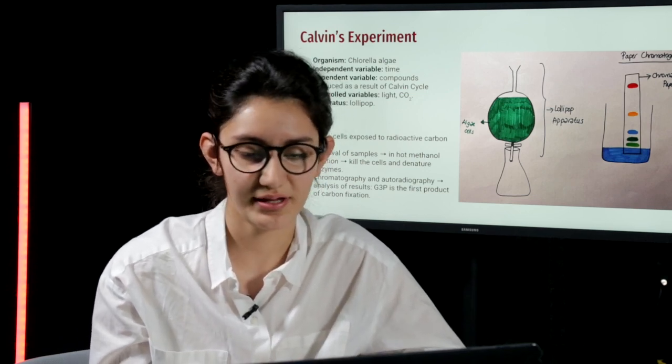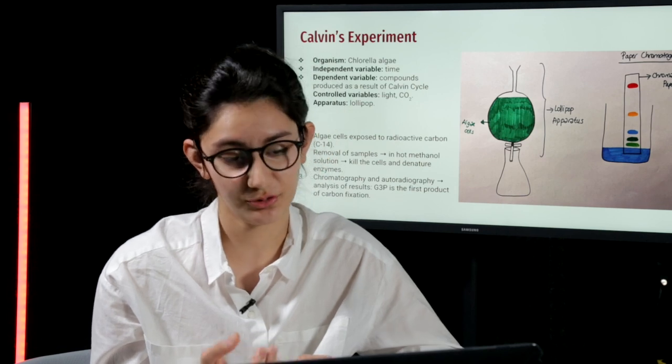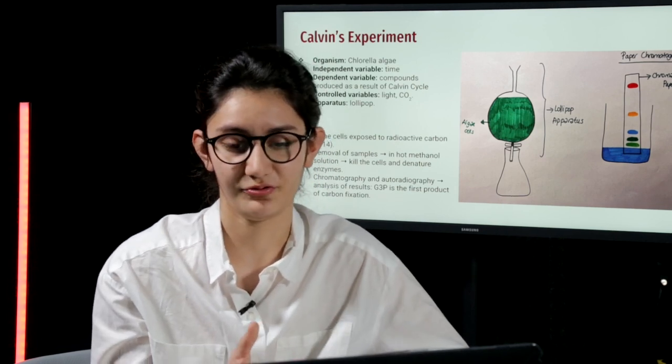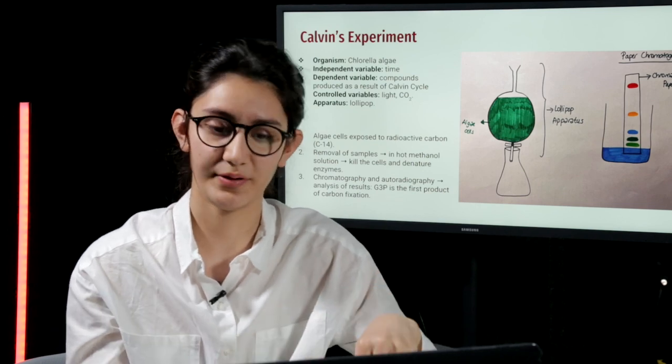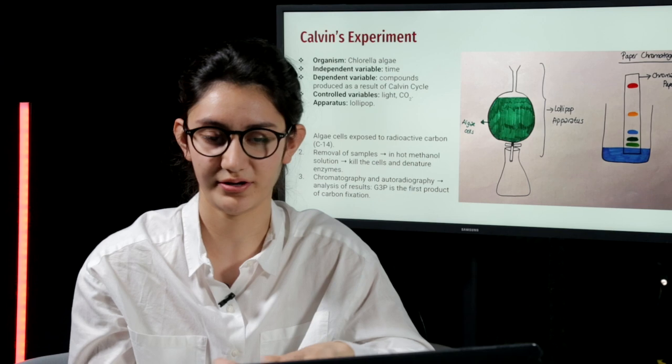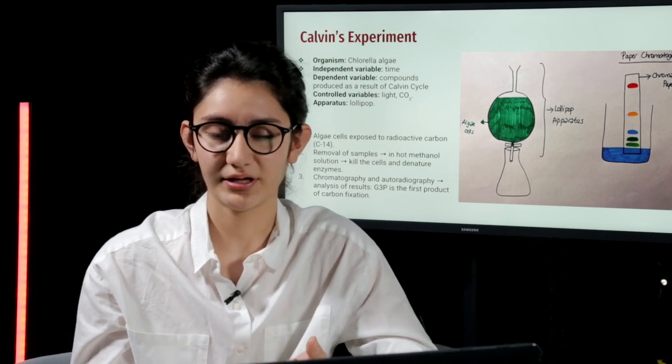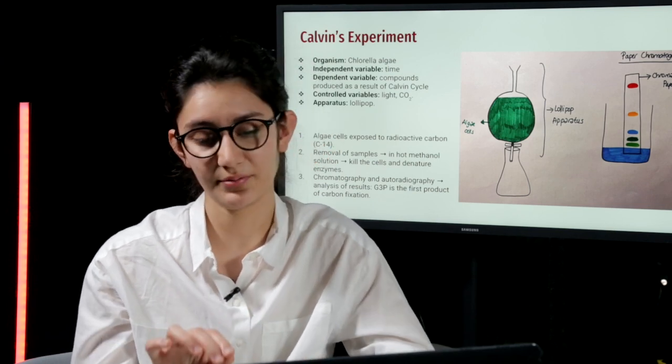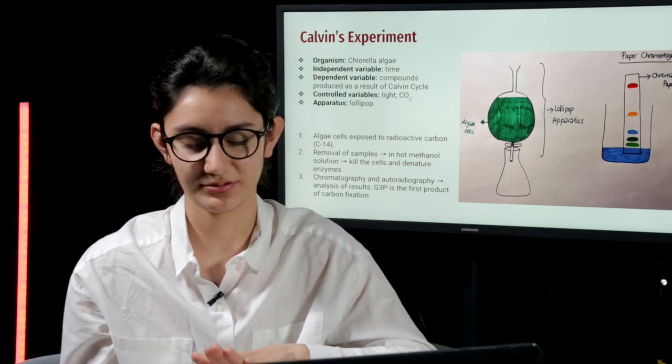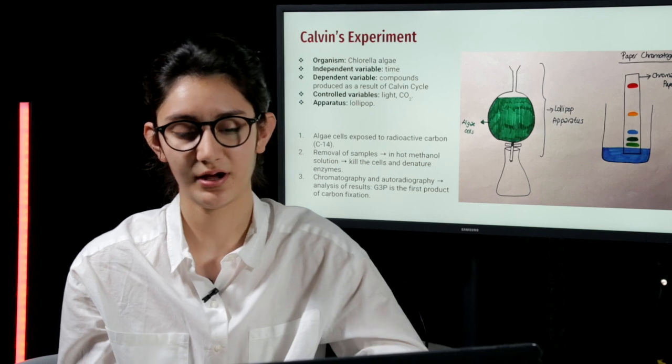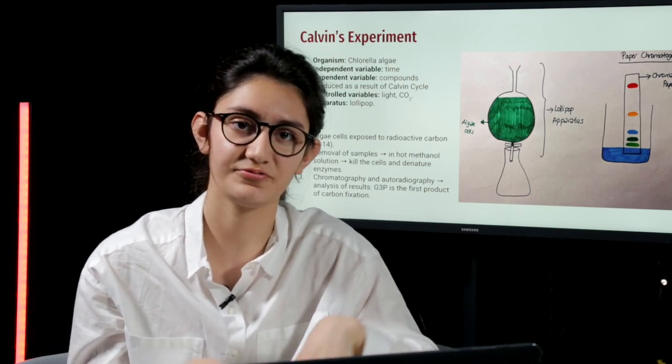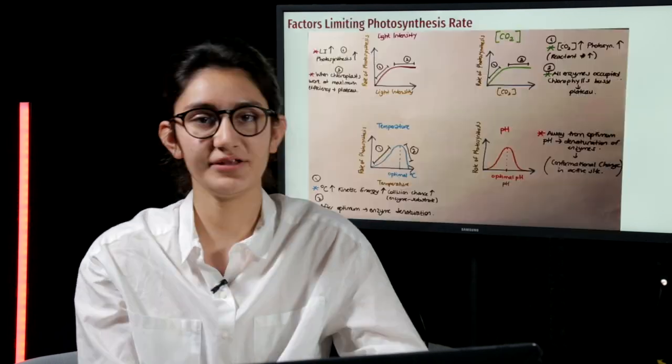When the results were gathered, in order to analyze them, they used two techniques: chromatography and autoradiography. You can see chromatography on the right-hand side. A chromatography paper is put in a beaker where there is a solution. On that paper, there is a sample, but this sample does not touch the solution in the beaker. After some time, the solution in the beaker goes up to the chromatography paper and separates the different pigments in that sample.